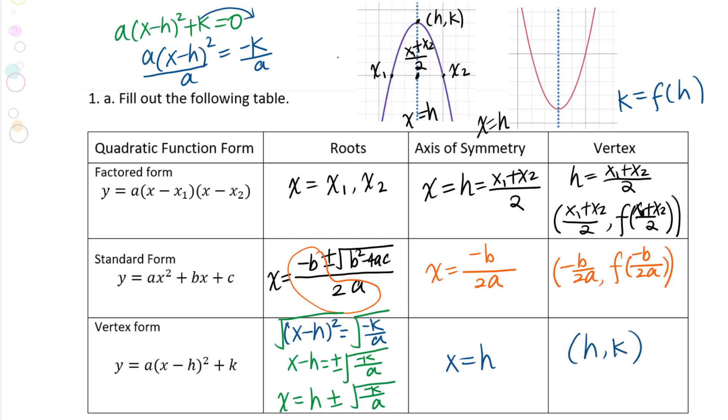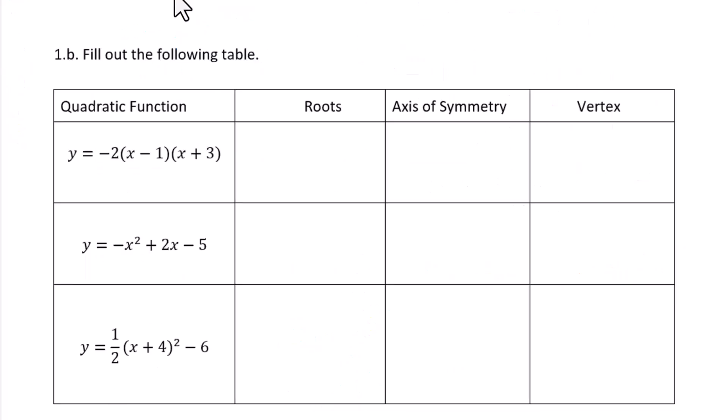When you try to figure out the axis of symmetry or vertex for vertex form, try to use the transformation. Or remember: the insider is a liar.